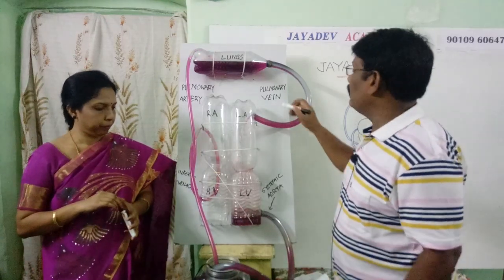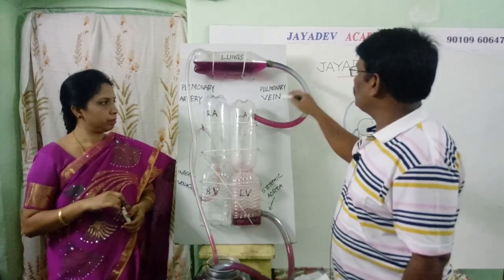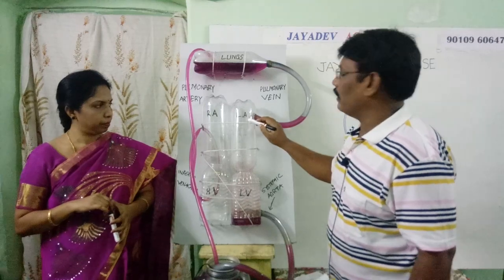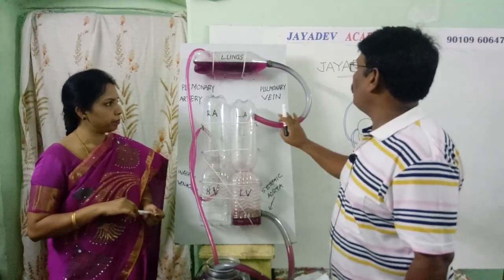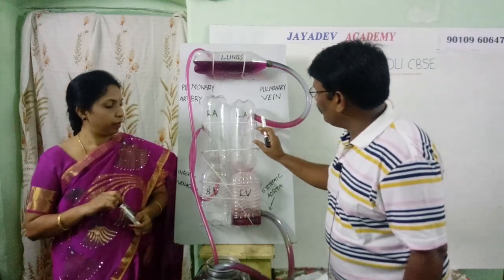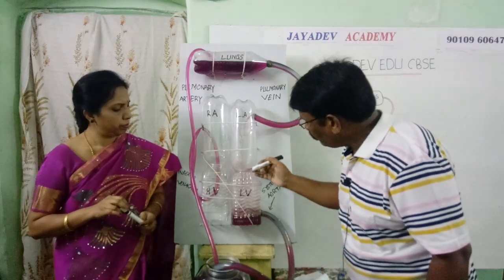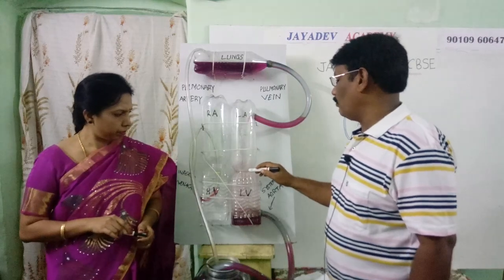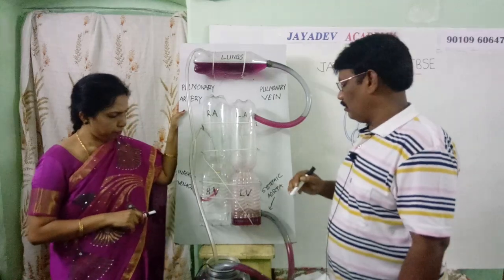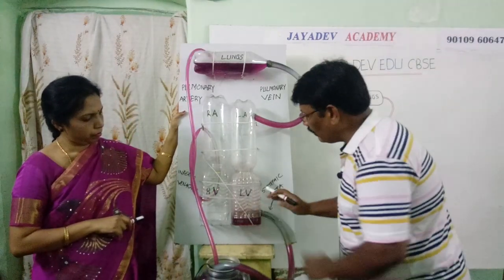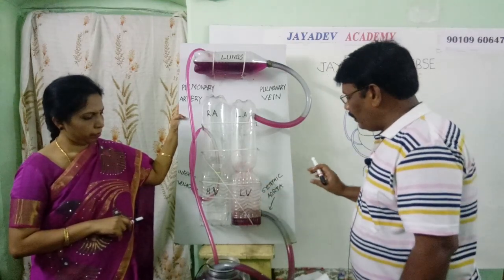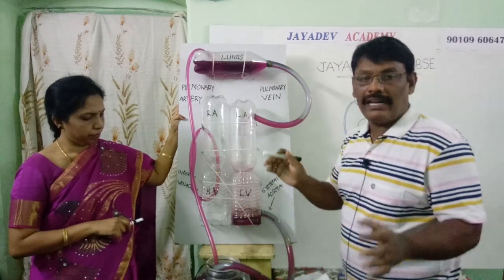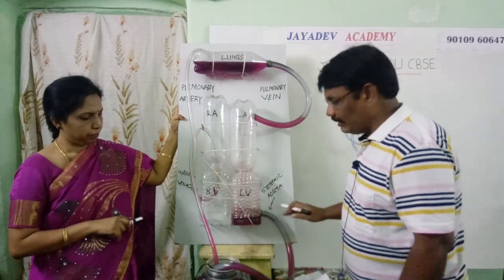The pulmonary vein carries the oxygenated blood from lungs to the left auricle of the heart. The left auricle receives the oxygenated blood, which then enters into the left ventricle through one valve called the mitral valve or bicuspid valve. The left ventricle pumps the oxygenated blood into various parts of the human body through one big blood vessel called the systemic aorta. This big trunk arises from the left ventricle and splits into small blood vessels — arteries and capillaries.